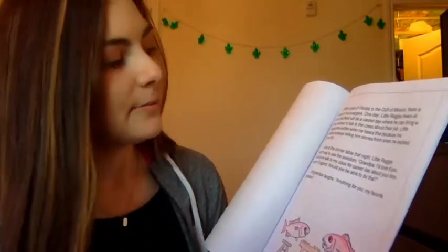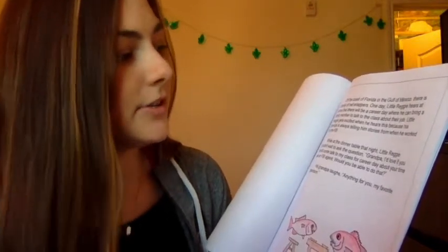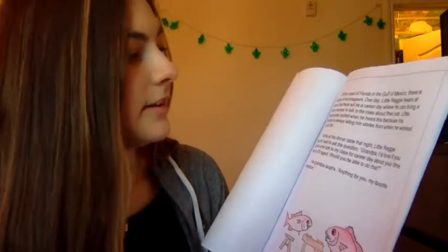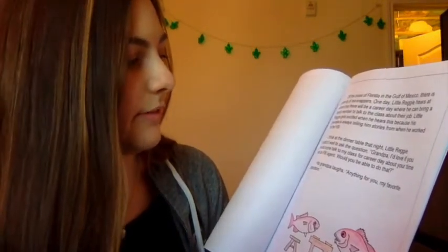Our story begins off the coast of Florida in the Gulf of Mexico. There's a family of red snappers. One day, little Reggie hears at school that there will be a career day where he can bring a family member to talk to the class about their job. Little Reggie gets excited when he hears this because his grandpa is always telling him stories from when he worked for the FBI.